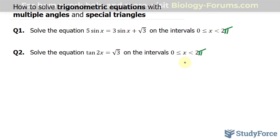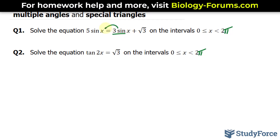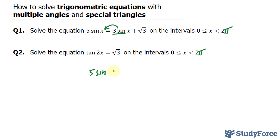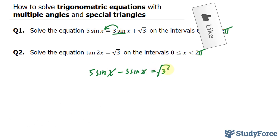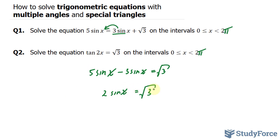Starting with question 1, I will bring the sine x term over to this side because they are like terms and can be combined. We have 5 sine x minus 3 sine x is equal to the square root of 3. Combining these two, we only look at the coefficients 5 and minus 3, giving us 2 sine x equals square root of 3. Then I'll divide both sides by 2, leaving us with sine x is equal to the square root of 3 over 2.